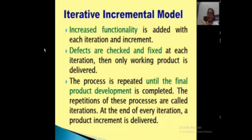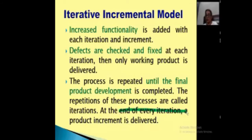It becomes easier to check defects by testing the second increment, third increment, and so on, so that the final working product is of good quality. The process is repeated until the final product development is completed. Iterations will be carried on until the customer is satisfied. These repetitions are called iterations. At the end of each iteration, a product increment is delivered. The number of iterations also depends upon the customer's satisfaction.